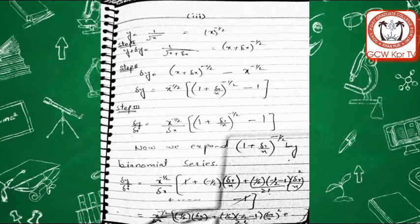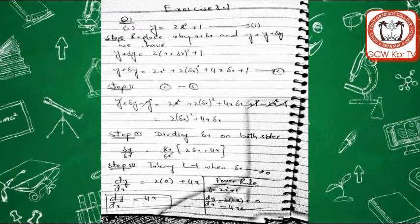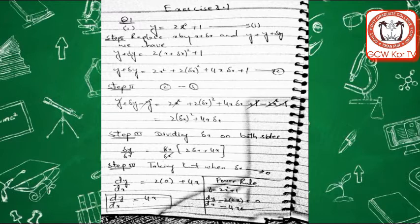Next: question number 1 का third part — y is equal to 1 over √x. आप इसको x की power minus 1 by 2 भी लिख सकते हैं, इसे करने से कोई फर्क नहीं पड़ता. Step number 1: y plus delta y = (x plus delta x) की power minus 1 by 2. Step number 2 में delta y निकालते हैं. Minus के बाद जो value आ रही है उसको first में से भी common ले लें. x की minus 1 by 2 common लिया दोनों में से — which is equal to x^(-1/2) × [1 plus (delta x over x) की power minus 1/2 minus 1]. Step number 3: delta y over delta x = x^(-1/2) / delta x.